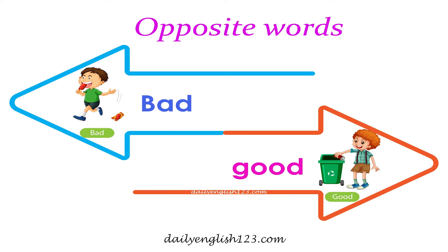Easy opposite words for kids. Number 1: Bad is the opposite of good.